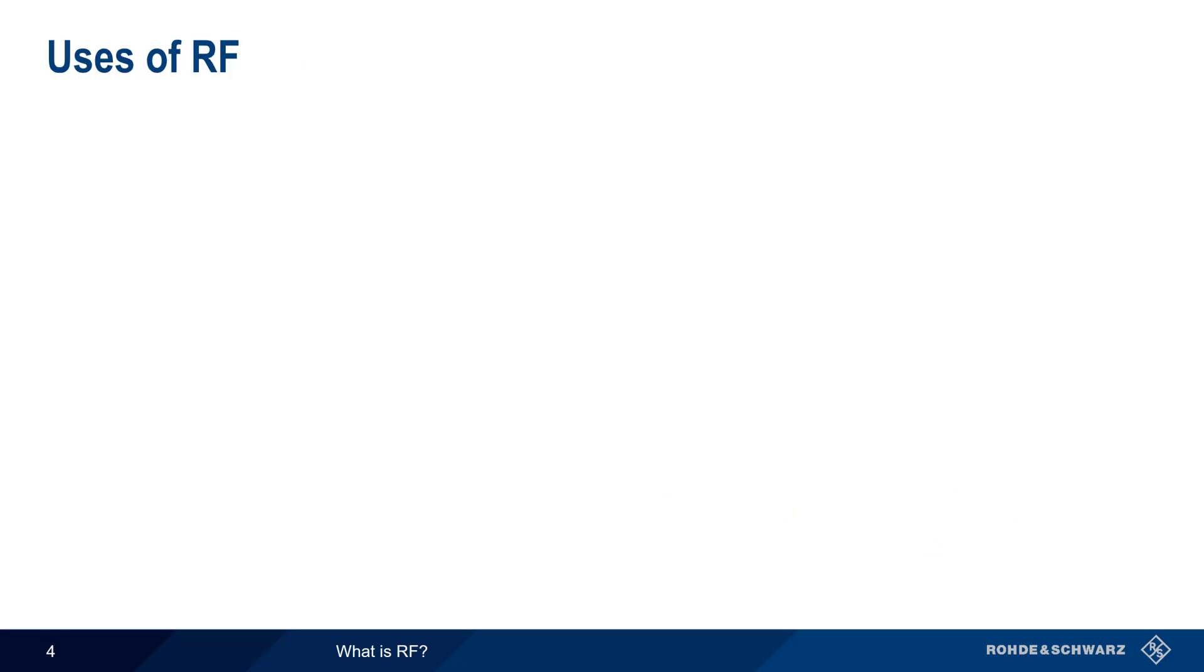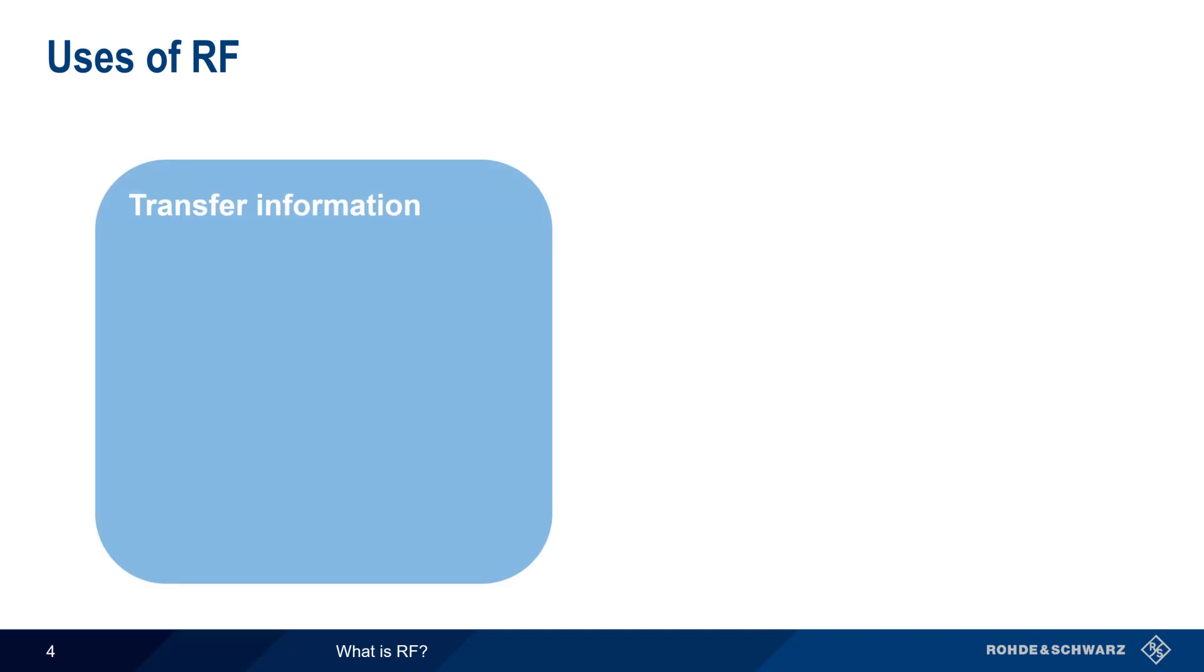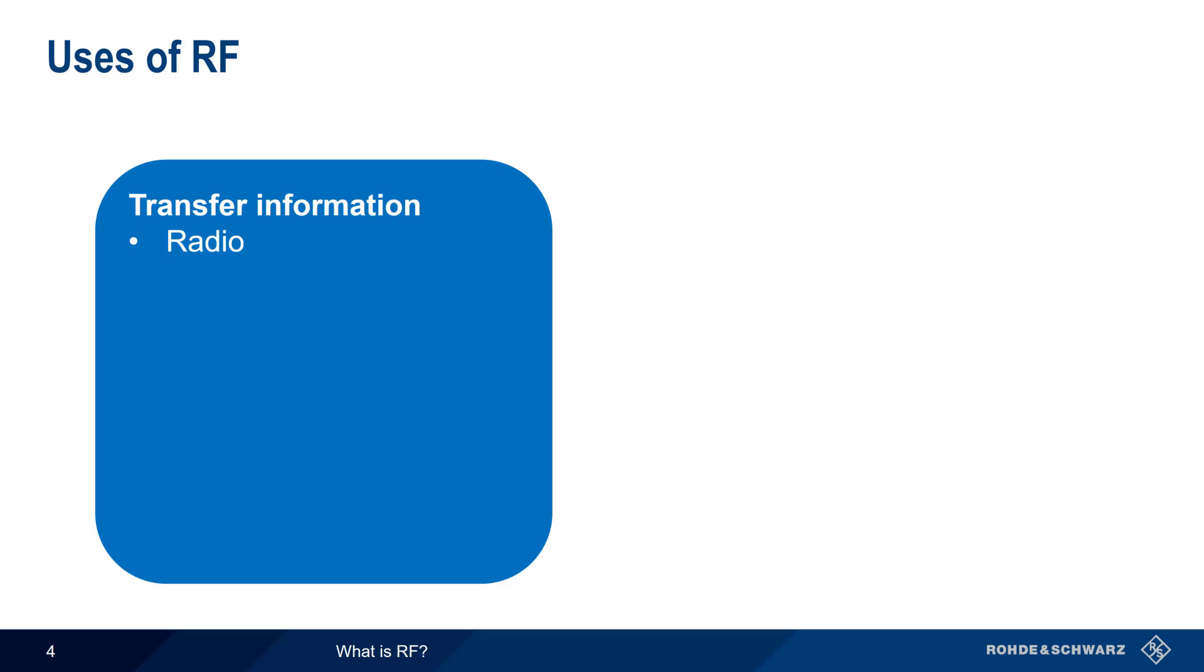There are three general uses for RF. The first, and by far the most common and most important, is transferring information. Radio and television broadcasts were among the first uses of RF for transferring information in the form of sounds and images.